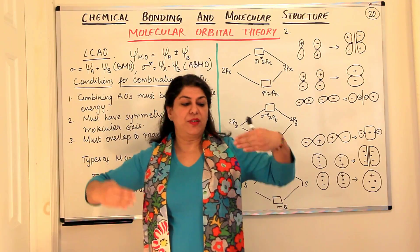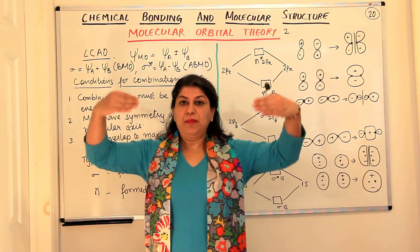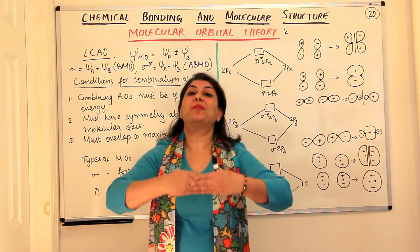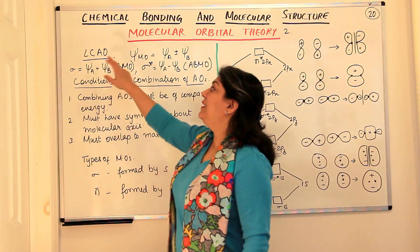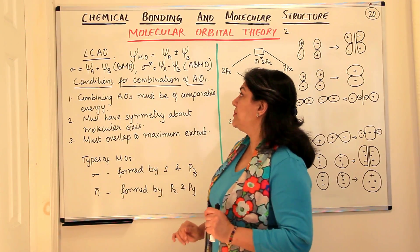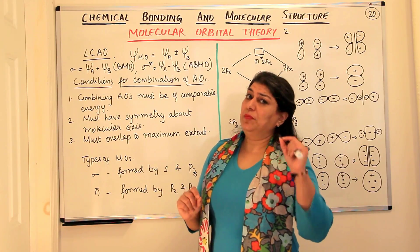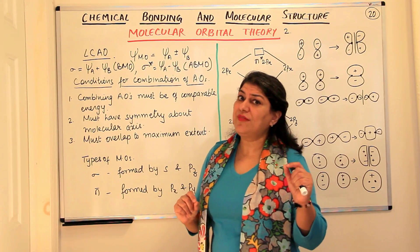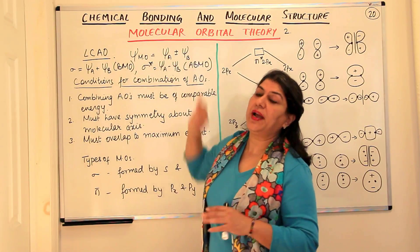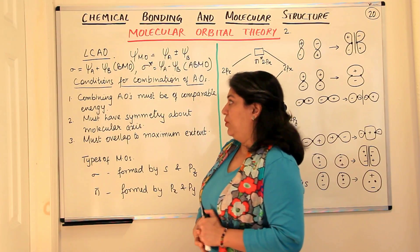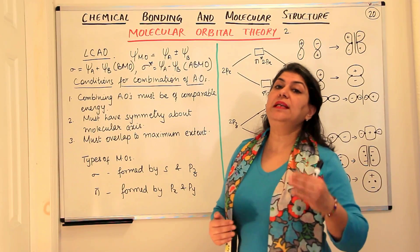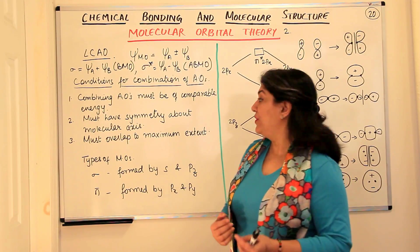Linearly means when they have the same energy—they are at the same level—those are the orbitals which combine. So we call it the linear combination of atomic orbitals, which tells us that molecular orbitals are formed and these molecular orbitals may be bonding molecular orbitals or anti-bonding molecular orbitals.